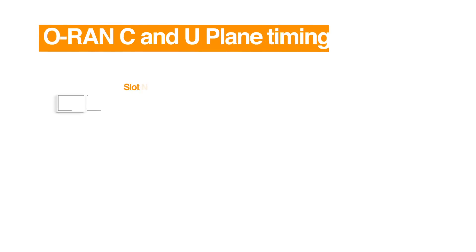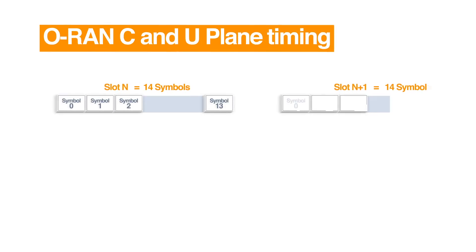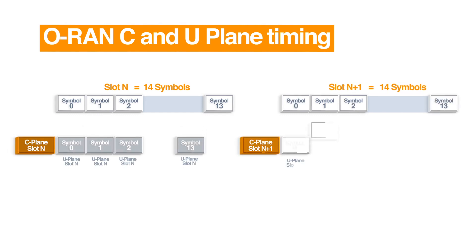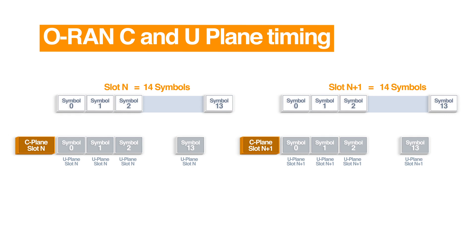We have C-plane and U-plane messages, but when are they sent from the DU to the RU? The C-plane defines the data sections for the complete slot and is required by the RU before the over-the-air operation of that symbol. So the DU sends the C-plane message ahead of the slot. Subsequently, the U-plane messages for the corresponding data sections of every symbol are sent serially over time across the slot, one symbol at a time.